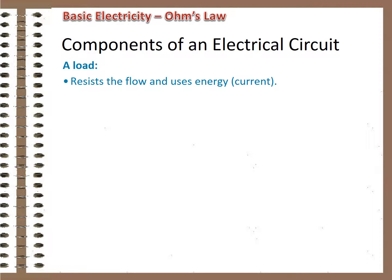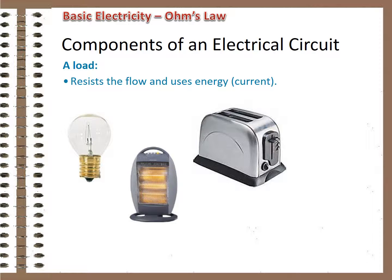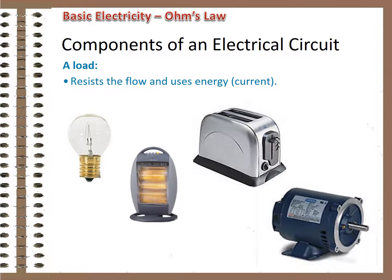Practical circuits have a load — something that uses the flow of electrical energy. Without the resistance of the load, there would be nothing to restrain the flow of energy through the circuit. We'd have what's called a dead short. There would be a mad rush of charges through the wire, and overheating and damage could result. The flow of electrical energy is called current, and is measured in amps, milliamps, or kiloamps, depending on the scale.